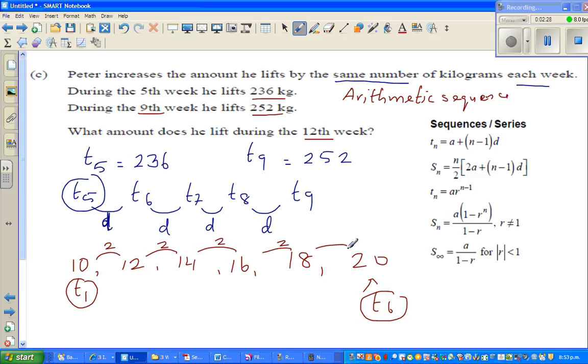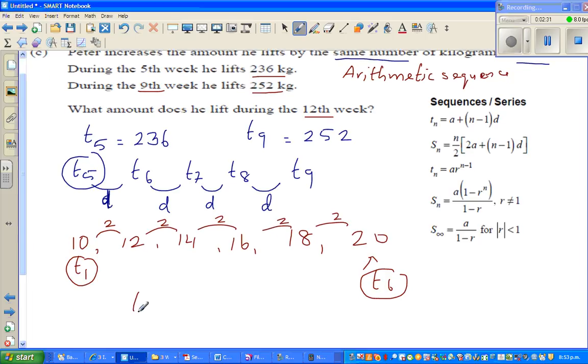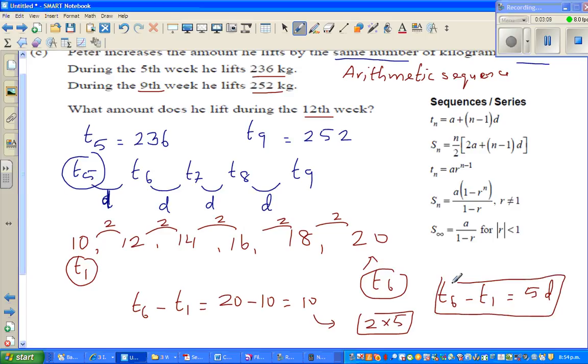So if you do t6 minus t1, that's 20 minus 10, which is 10. How many differences is there? 1, 2, 3, 4, 5. That is the same as 2 times 5. In other words, t6 minus t1 is equal to 5 times the difference, 5D. I hope you see this. 6 minus 1 is 5, so 5D is the difference.